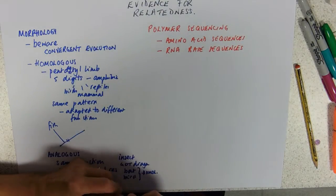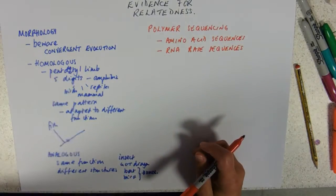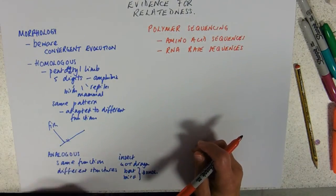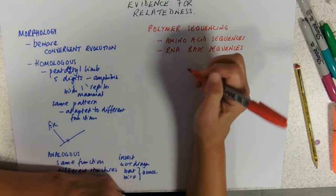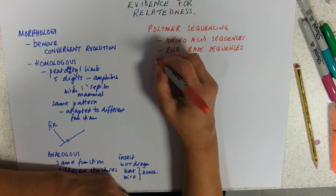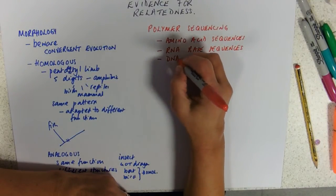We've got RNA base sequences. And if you think, pretty much all organisms have ribosomes, even bacteria, we can base sequence the RNA that makes that. And we've got DNA base sequences.